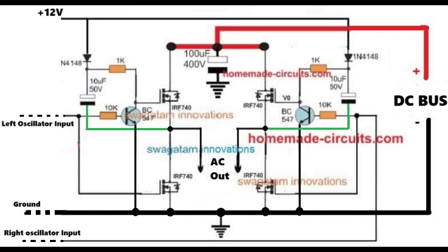In this video, we will discuss a simple universal H-bridge module using BJTs and N-channel MOSFETs. This module, which you can see on your screen, can be integrated with any standard oscillator IC such as IC4047, IC SG3525, or even IC555 to create a highly efficient H-bridge inverter.